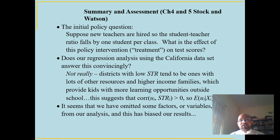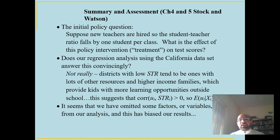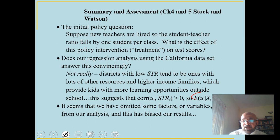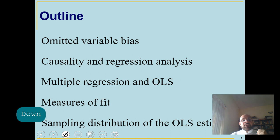There can be many other factors affecting both student-teacher ratio and test score. If some variable affects student-teacher ratio and test score but is not included in the model, this may lead to correlation between student-teacher ratio and u_i, meaning the expected value of u given x will not equal zero. That is what we call omitted variable bias.